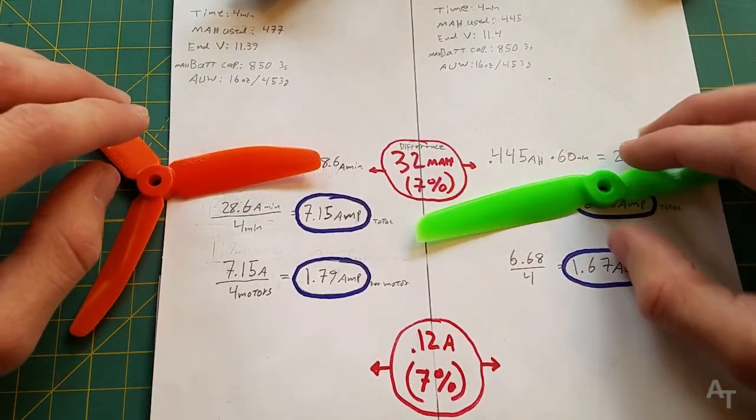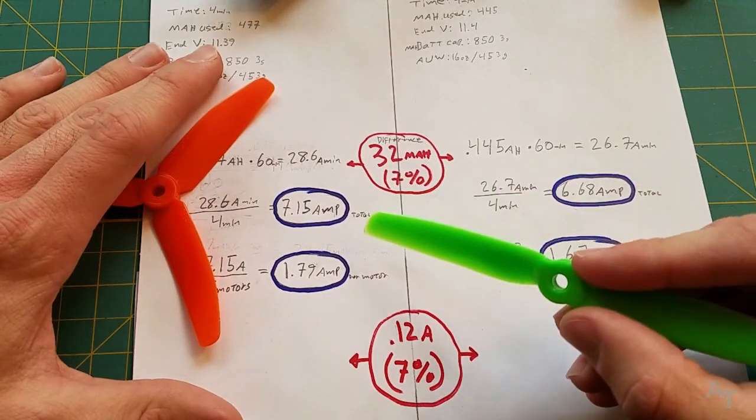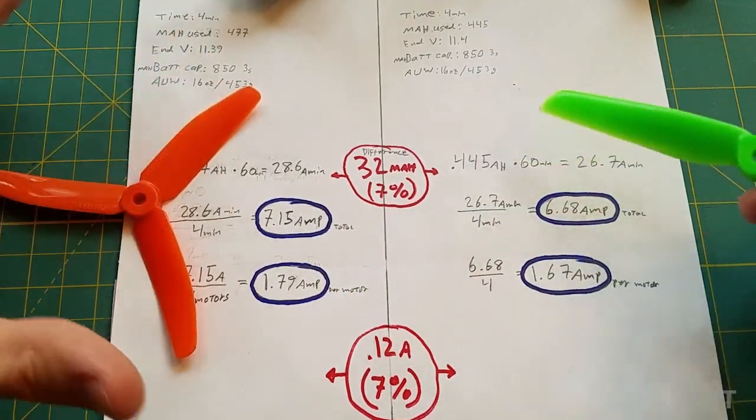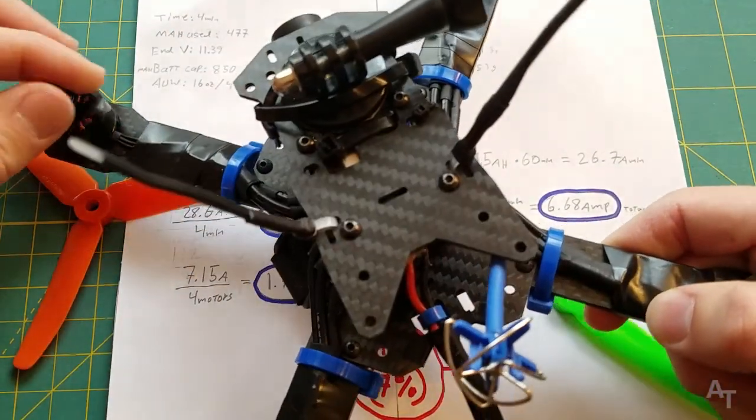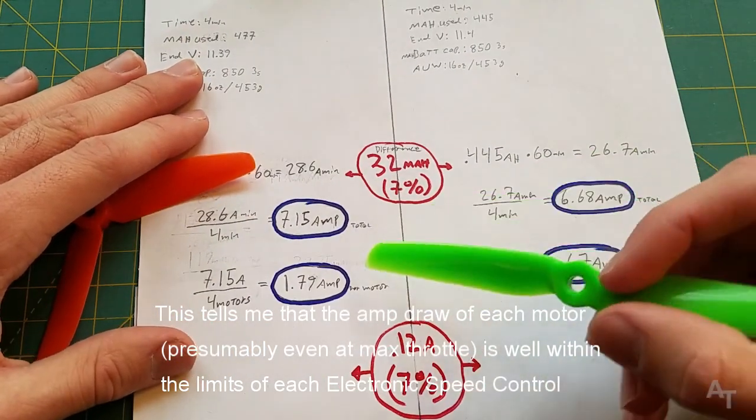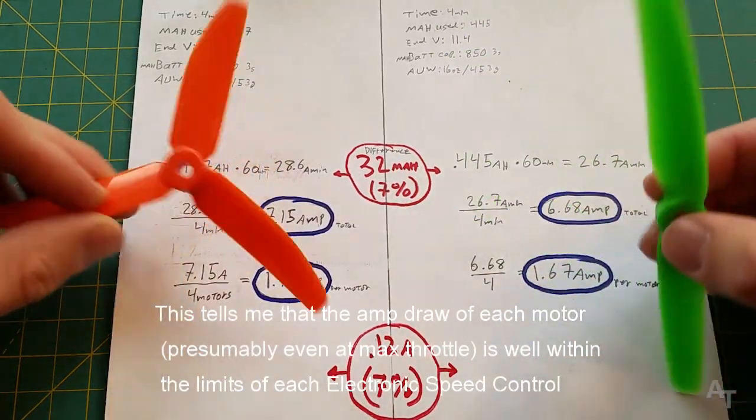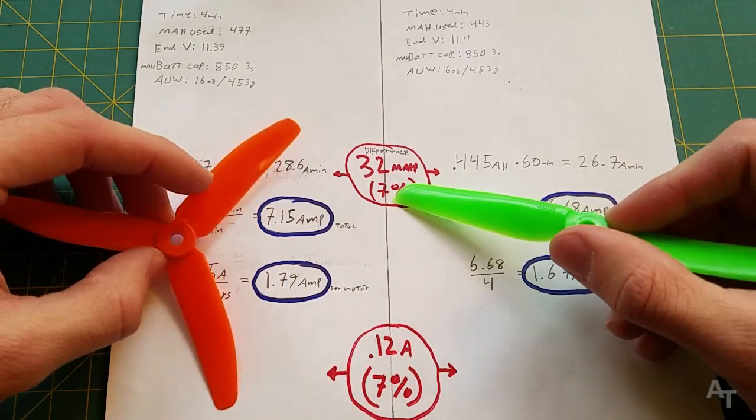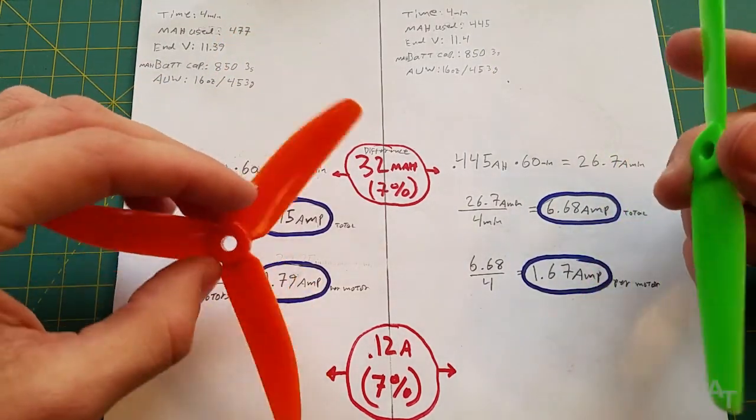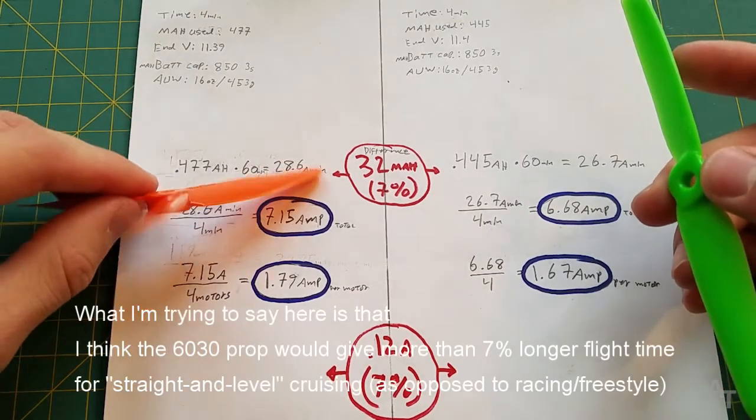What does this actually tell me? It tells me that the 6030 prop is slightly more efficient, which is pretty much what I was expecting. Importantly, it gives me a ballpark idea of what the total amp draw is for each one. These ESCs are rated for 12 amps, and I believe that's 12 amps per motor. If that is the case, then that means it's pretty dang efficient. As far as the seven percent difference, is that really enough to matter? Well, probably not if it's just seven percent, but I have a feeling that if I wanted to do longer duration flights or fly faster over long straight runs, I think the bi-blade would definitely be better.